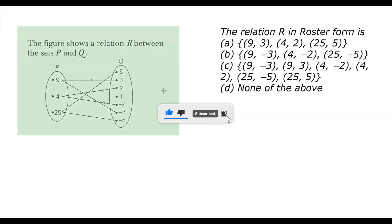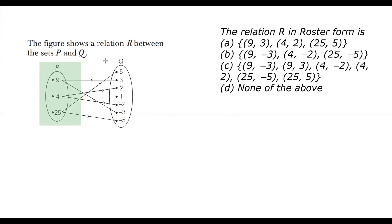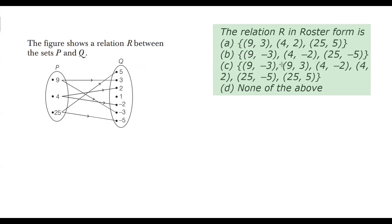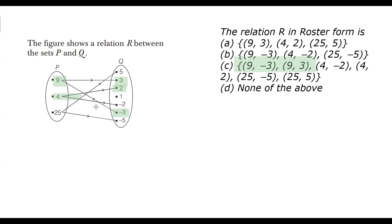In this question, an arrow diagram from set P to Q is given and we identify the relation in roster form. From the diagram: 9 is related to -3 and 3, so (9,3) and (9,-3); 4 to 2 and -2, so (4,2) and (4,-2); 5 to 25 and -5 to 25, so (5,25) and (-5,25). This gives the correct option.